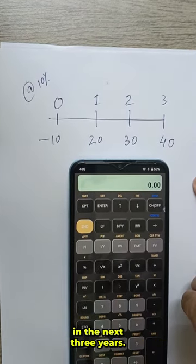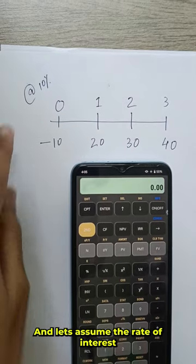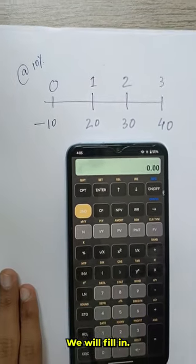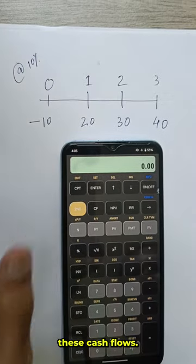30, 40 as the positive cash flows in the next three years and let's assume the rate of interest or the discounting rate to be 10%. So first we'll fill in these cash flows.